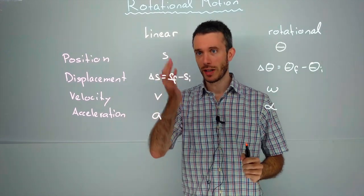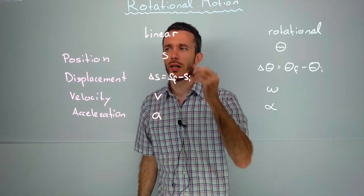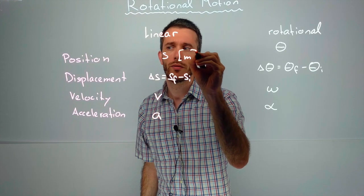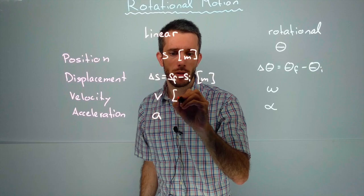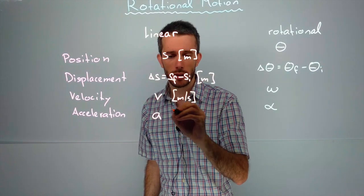Now what are the SI units that we are using? In the linear case we used meters for position and displacement. We used meters per second for velocity.